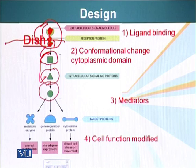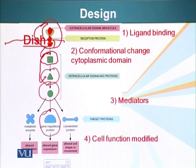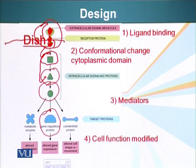For example, a skeletal protein can receive information to polymerize or depolymerize microtubules. In many cases, it will activate a regulatory protein — a gene regulatory protein like a transcription factor — which goes and binds a specific region in DNA, resulting in transcription of a specific messenger RNA. Ultimately, the end result is that the cellular function is modified: the cell, which was not able to do something before, is now able to do that particular thing.